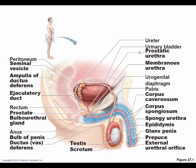The testes are housed within the scrotal sac outside the body because ideal sperm development is at a slightly lower temperature than body temperature — about three degrees Celsius lower. Muscles and ligaments within the spermatic cord control the height of the scrotal sac. When it's warmer, the testes hang further from the body to cool them; when it's cold, the muscle pulls the testes in tighter to keep them warmer. Egg development in females is not temperature sensitive.